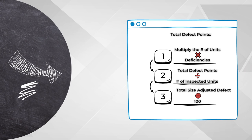Step two: each of the inspectable areas across the five categories will carry a weight called the total defect points. These total defect points assist in the calculation formula for scoring the inspection. To obtain the total defect points, multiply the number of units by the deficiencies to arrive at the defect severity category.